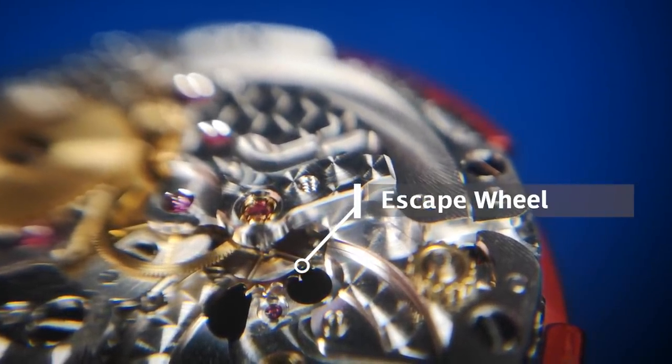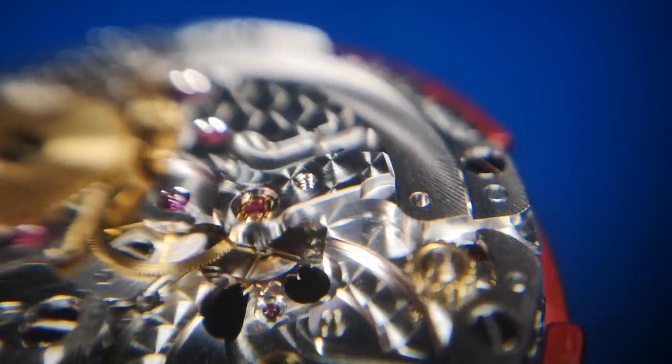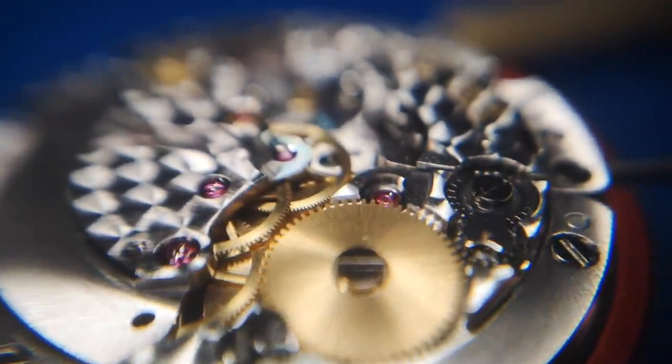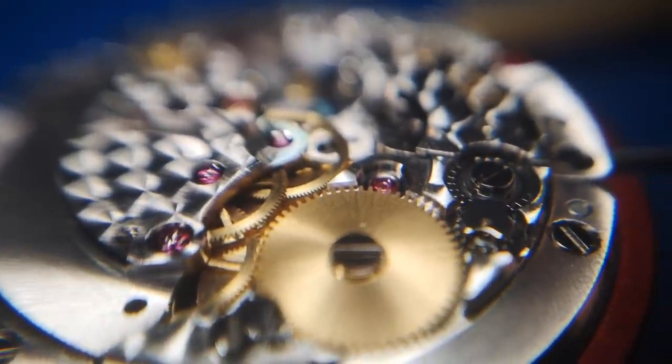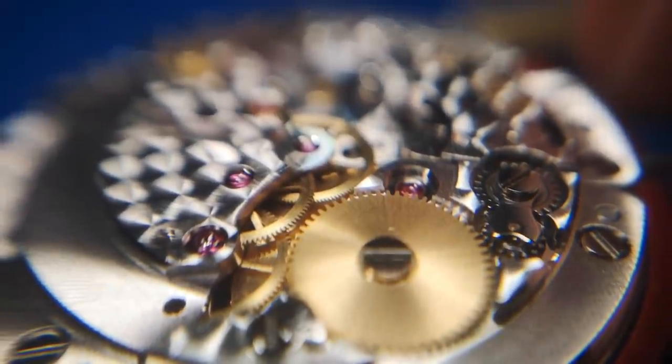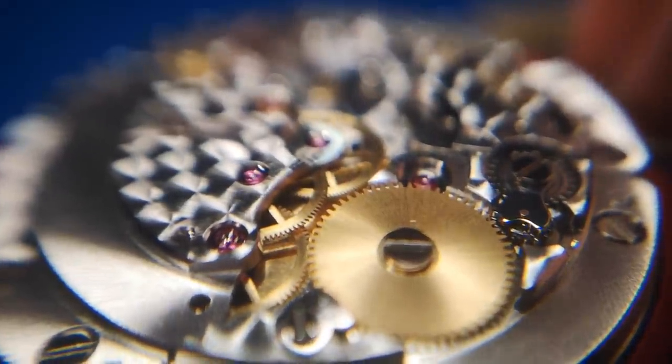When the escapement is not attached and the pallet fork is not stopping the escape wheel, the whole train is free to move. So if I just touch now and put a tiny little bit of power onto the train in the stem, you'll see it just jump into action. And with a Rolex it's very very lovely.